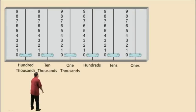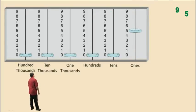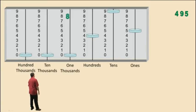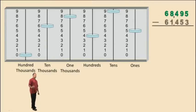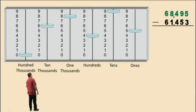Let's enter a number here. Let's put in 5 ones, 9 tens, 4 hundreds, 8 thousands, 6 ten-thousands. And from this number, we are going to subtract 61,453.